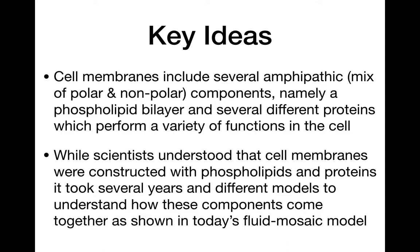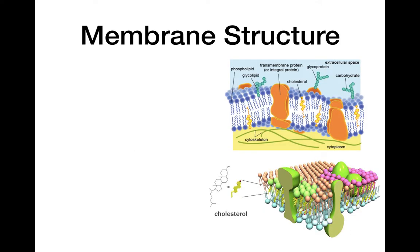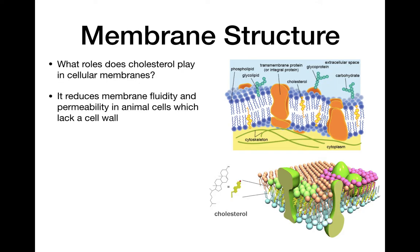Here are your key ideas — pause the video, give them a read, and if you have a question, please ask. The next part of our lesson on membrane structure is cholesterol. Cholesterol is one of the components the IB wants you to know about for cell membranes. One important thing it does, particularly in animal cells, is it reduces membrane fluidity. Membranes are still very flexible, but they need some structure, and cholesterol helps with that. It also reduces permeability to help control what comes in and out of the cell. Since animal cells lack a cell wall, that's particularly important.